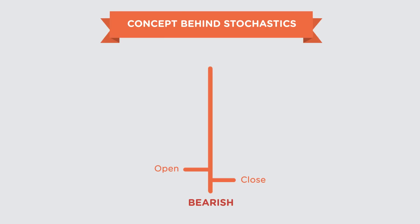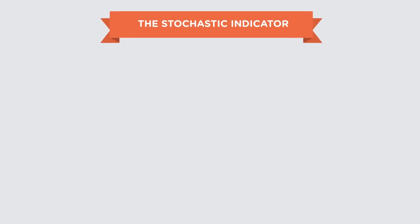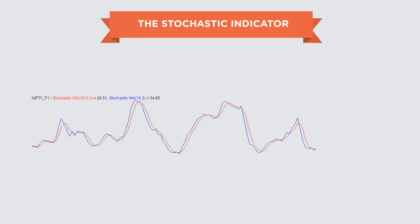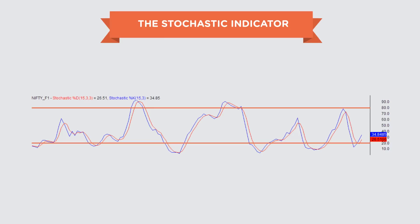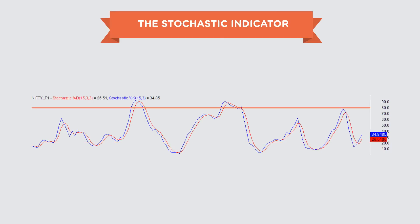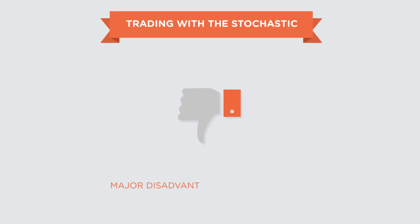Based on the close, we can tell whether the market is in an oversold or overbought condition, giving us a better idea of the market trend. The stochastic is an oscillator that moves between zero and 100. You need to draw two horizontal lines — one at 80 and one at 20. When the oscillator reaches 20, the market is oversold and we expect a bounce back; when it reaches 80, the market is overbought and we expect a sell-off.